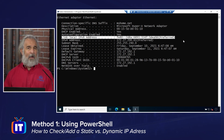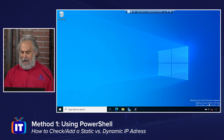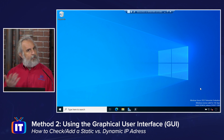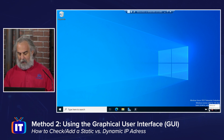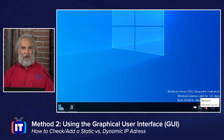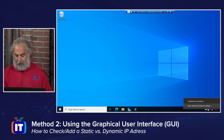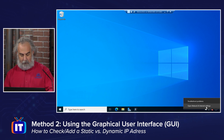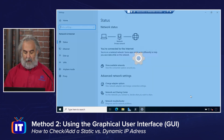It's easy to check if we know what to look for, but we can also do this through the graphical interface. Let's minimize PowerShell and open up the graphical interface to see the same information using the properties of the network card — in this case, our Ethernet adapter. I'm going to right-click on the network icon down at the bottom and choose to open Network and Internet Settings from the pop-up menu.